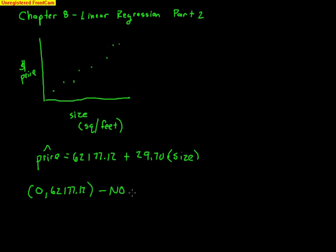You need to write that out. A house of zero square footage would cost $62,177.12. And no, in a real-world application, it does not make sense. But remember, we talked about sometimes the y-intercept makes sense. Sometimes it doesn't. In this particular case, it would not make sense.